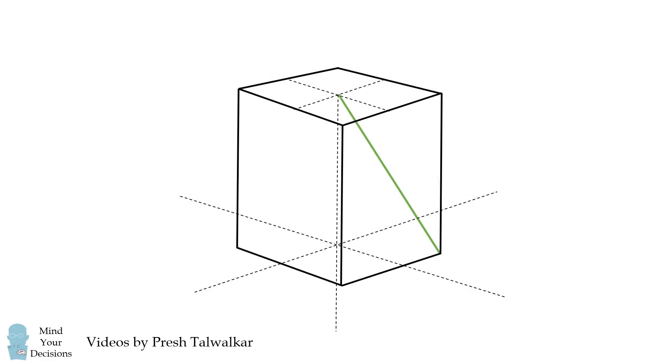We'll get started by focusing on just the cube. The green line goes from the center of its top face to a corner of its bottom face.